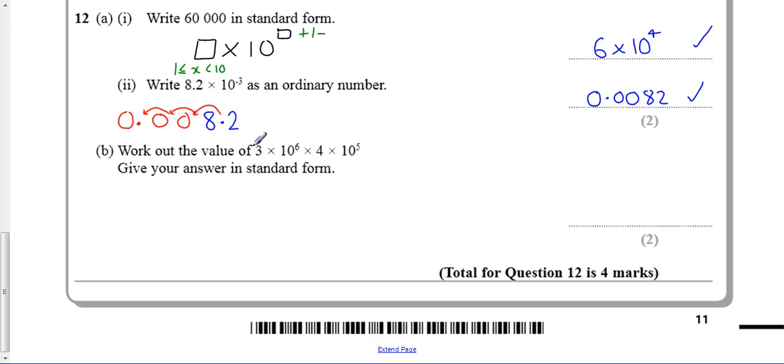Last one. So let's work out the value of this. So it's one number in standard form times by another number in standard form. So what we're going to do is we can take the number 3 times 4 and then we can treat the powers of 10 separately. 10 to the power of 6 times 10 to the power of 5 and then we can work out each bit separately.